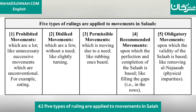Five types of rulings are applied to movements in Salah. First, prohibited movements, which are a lot, like unnecessary successive movements which are unconventional — for example, eating.